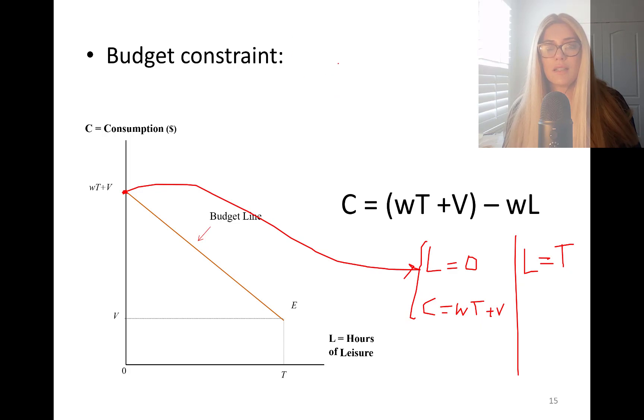Plugged it in. C equals W times T. I'm going to plug in T whenever I see leisure. W instead of L, plug in T. W times T minus W times T. They cancel out.